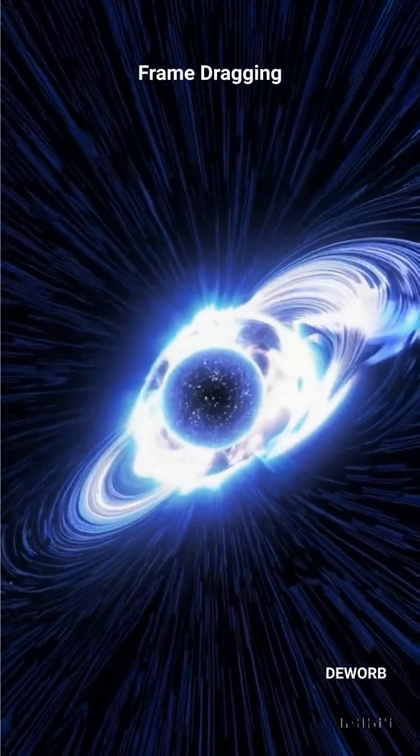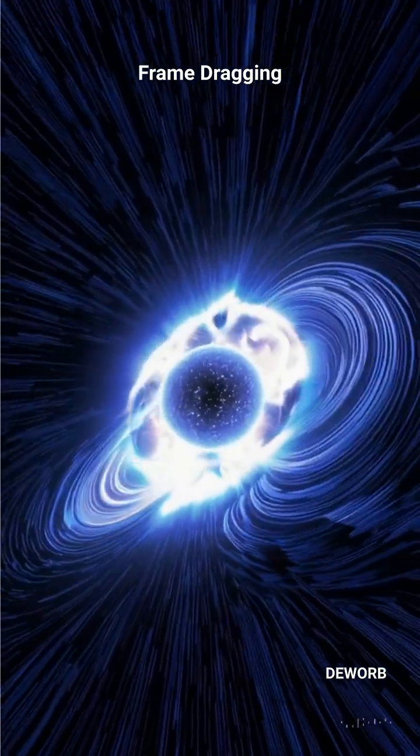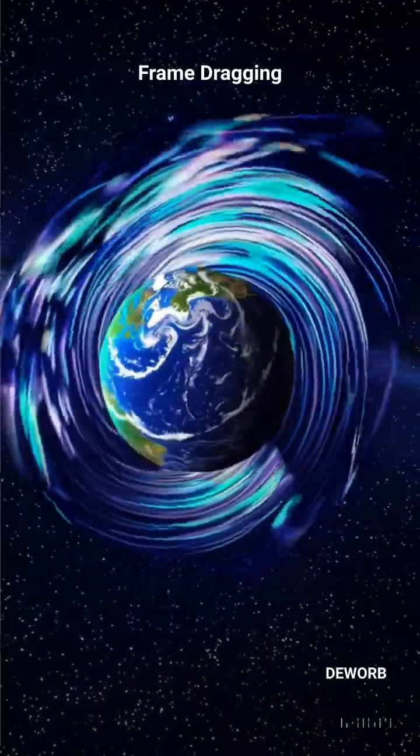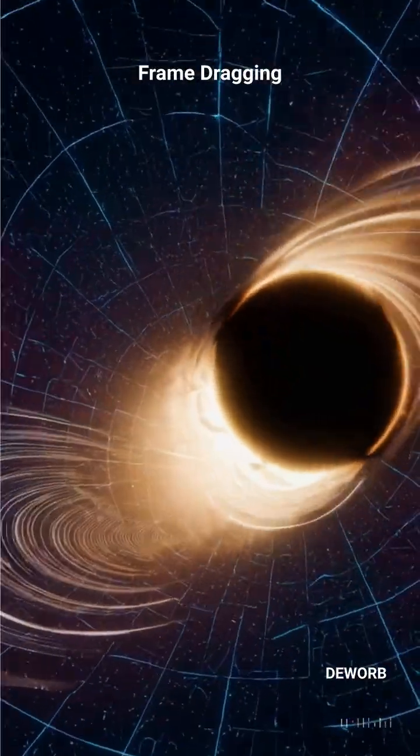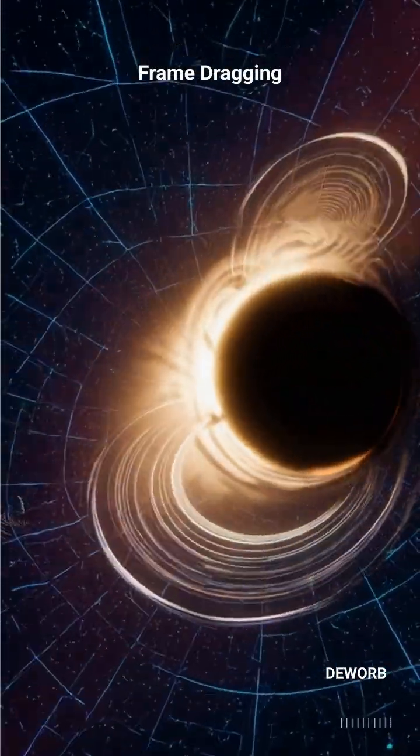Did you know, according to Einstein's general relativity, massive spinning objects like Earth, neutron stars, and black holes don't just sit in space,